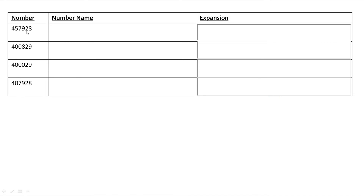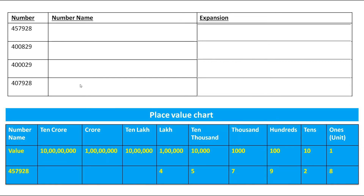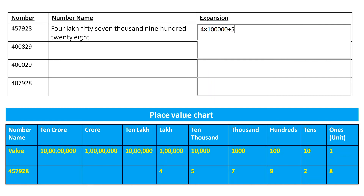The next number is 4,57,928. In the place value chart, 4 is on lakh, 5 on 10,000, 7 on 1,000, 9 on 100, 2 on 10s, and 8 on 1s. The number name is four lakh fifty-seven thousand nine hundred twenty-eight. The expansion is 4 × 1,00,000 + 5 × 10,000 + 7 × 1,000 + 9 × 100 + 2 × 10 + 8 × 1.